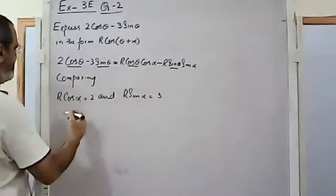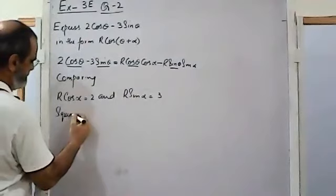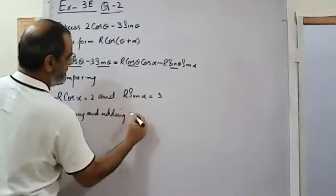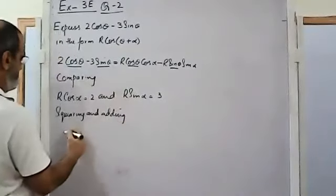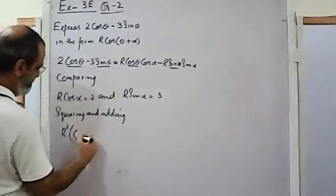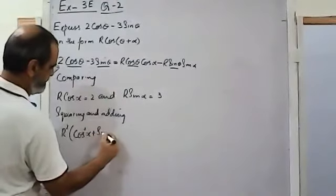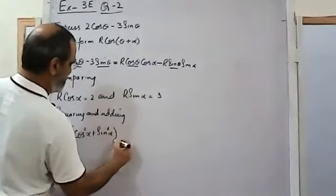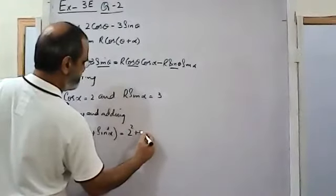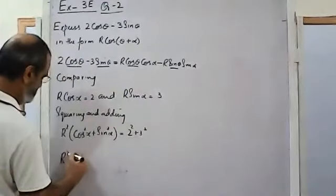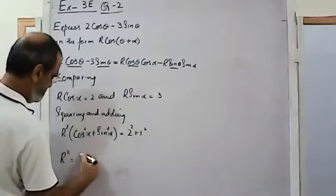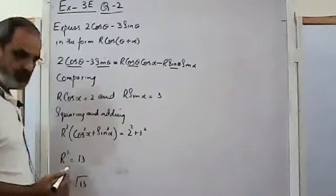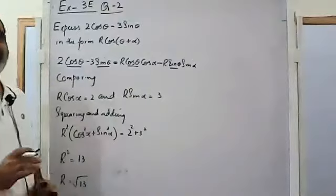Squaring and adding those two equations gives r² = 4 + 9 = 13, so r is equal to square root of 13. While taking the square root I am not considering positive and negative signs.